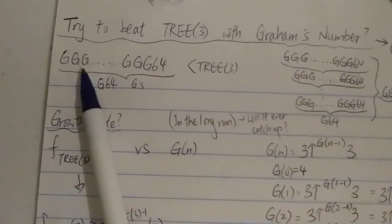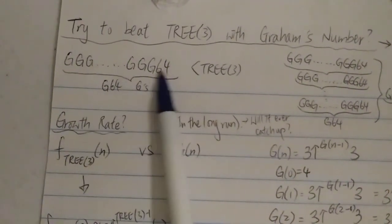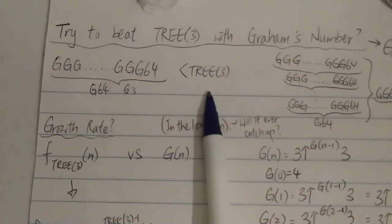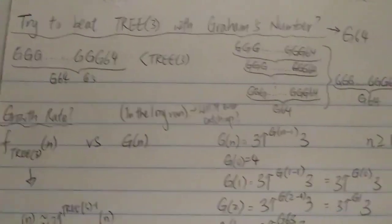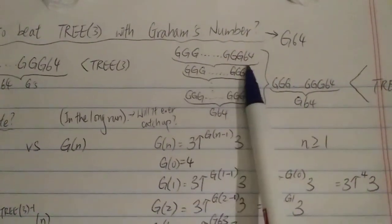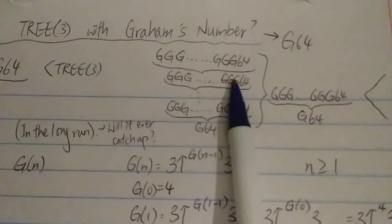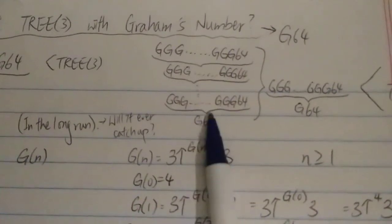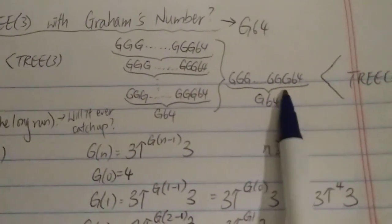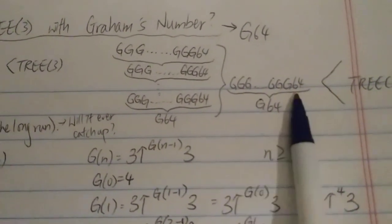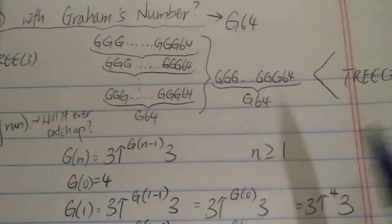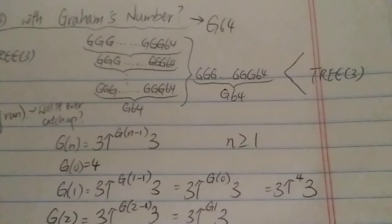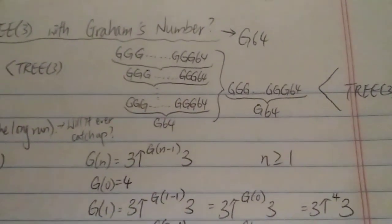G64 with G64 number of G's is still nowhere near 3↑↑↑3. In fact, even if you do something crazy like G G G G 64 with G64 number of G's here, and continue with G G G G G G G G 64 with G64 number of G's — this number of levels still will be nowhere near 3↑↑↑3. It's just that big.